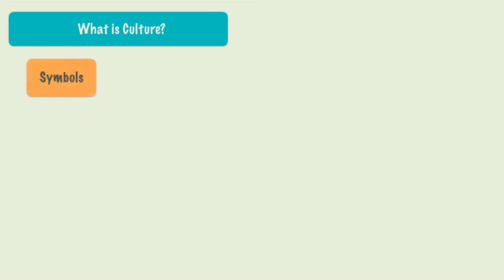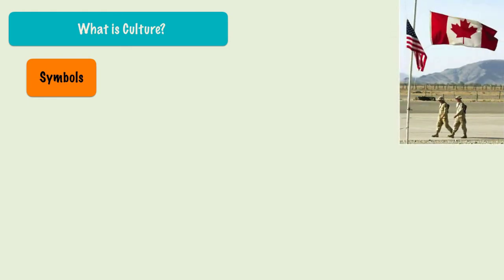Let's look at some of the components of culture, beginning with symbols. Symbols are anything that meaningfully represents something else. The Canadian flag versus the American flag, for example, has different meanings in terms of what the people of those countries think of them and what people of other countries think of them. Symbols can function to produce loyalty, animosity, love, or hate.